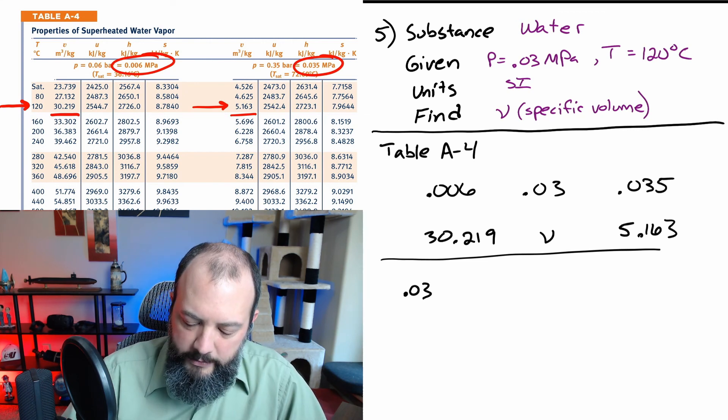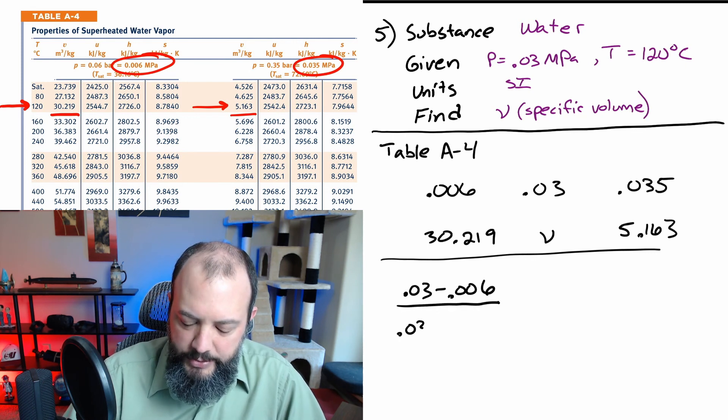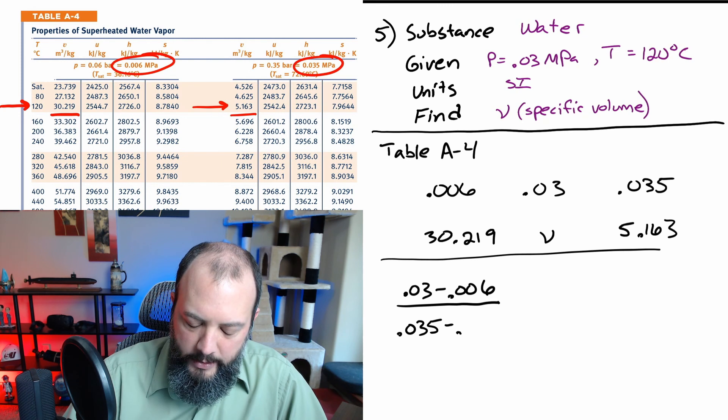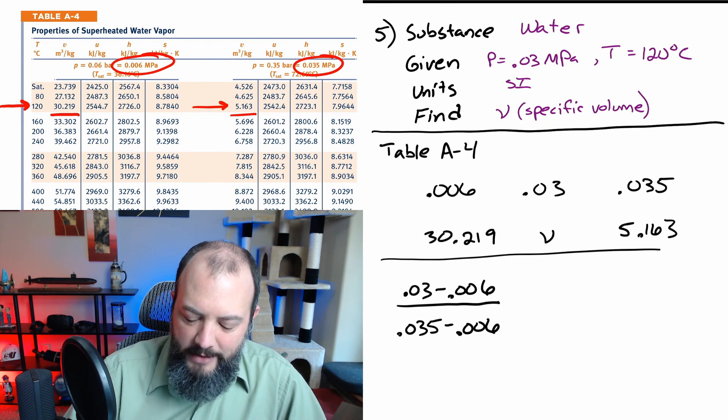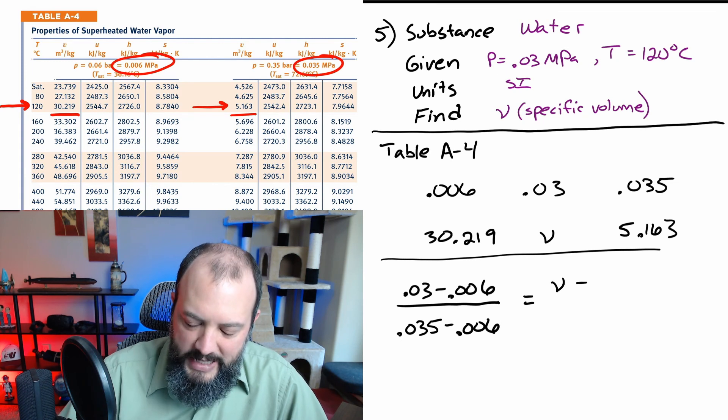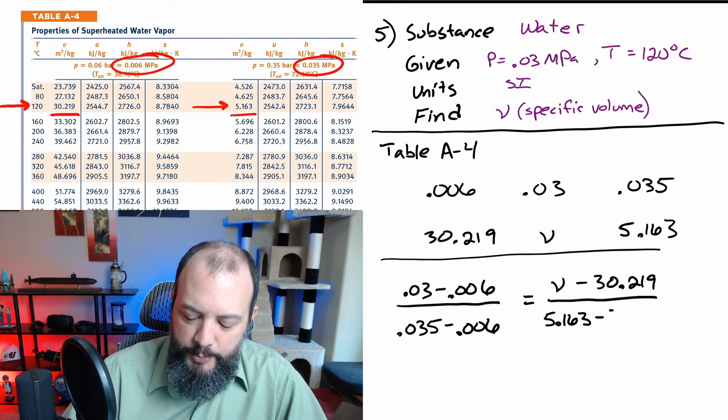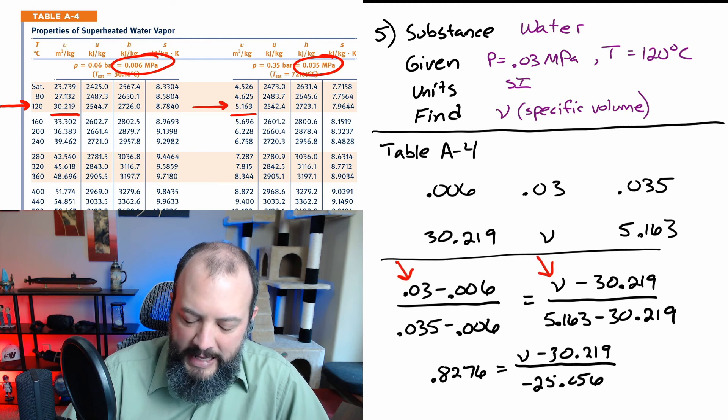And as a reminder, it doesn't actually matter that the numbers on the right side fraction are both going to be negative because since both the numerator and denominator are going to be negative numbers, those negative signs will cancel each other out. And with a little bit of calculator work, we get a specific volume of 9.48 meters cubed per kilogram.